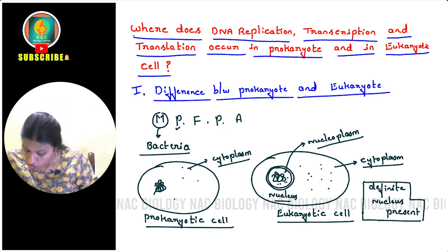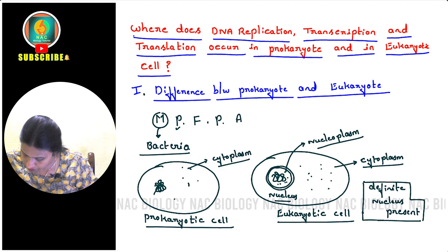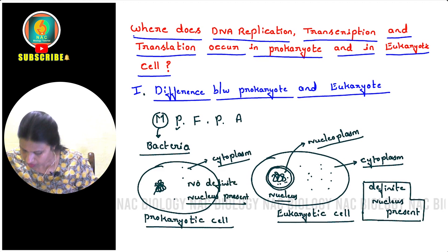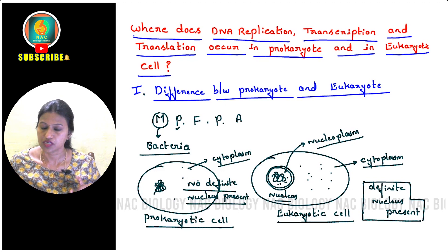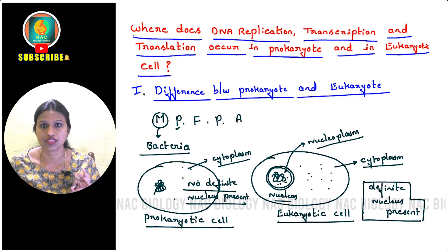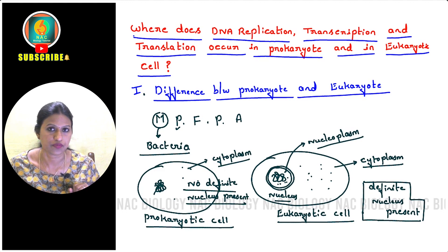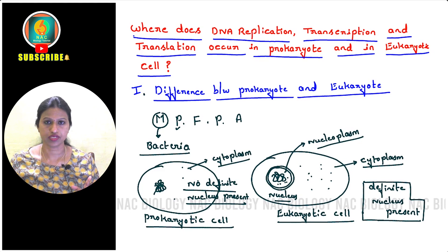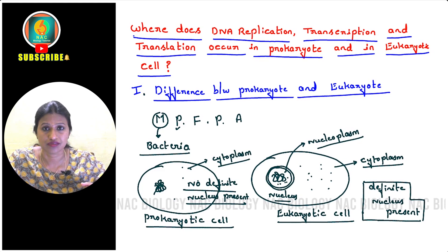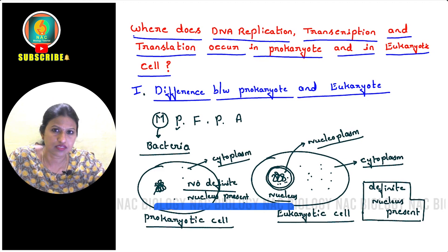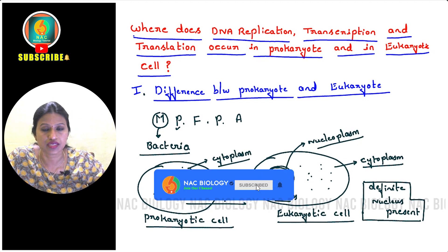So this is the basic difference we have understood. Now the next concept to understand is the central dogma of molecular biology. Whatever our appearance — eye color, hair color, hair texture, skin color, height — everything is determined by proteins.